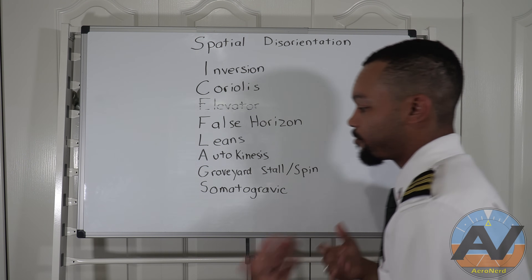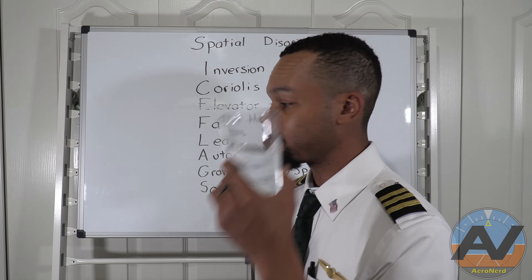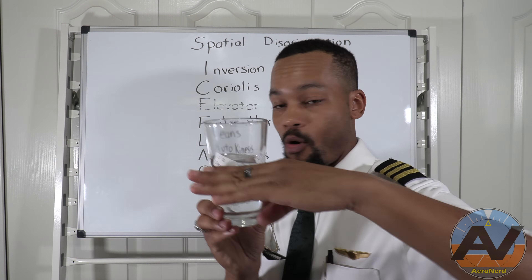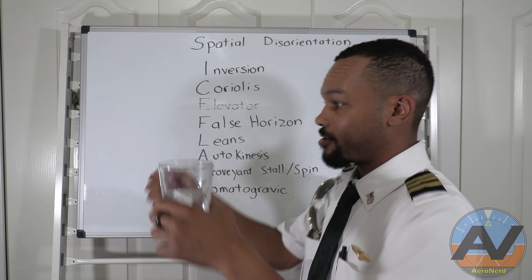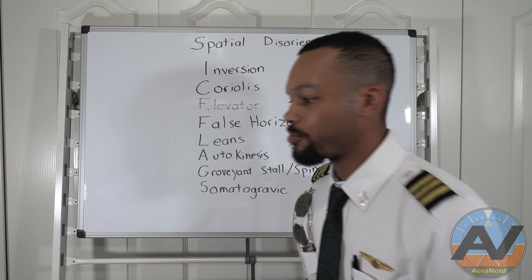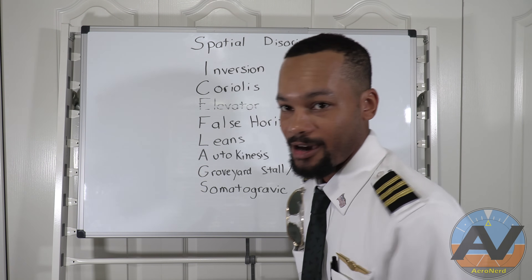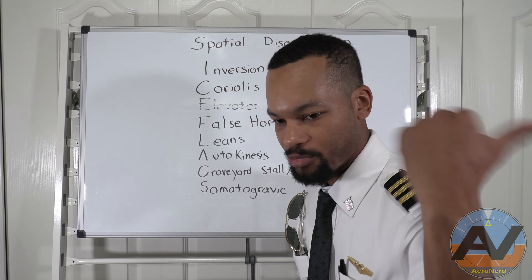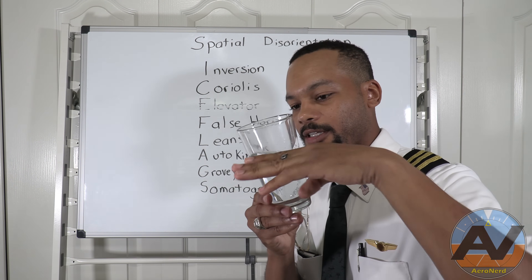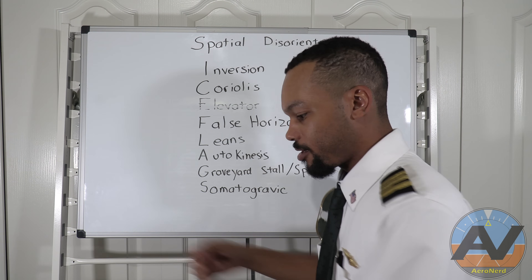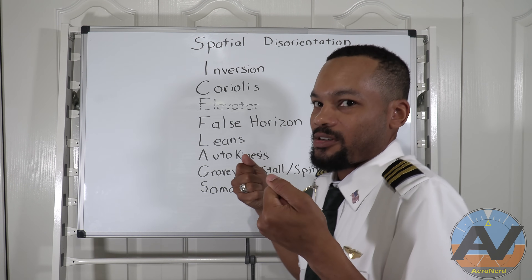Somatogravic illusion — this is what I was talking about before with acceleration. When you accelerate and can't see anything, the fluid goes backwards and you feel like you're tumbling backwards, so you push the yoke forward. But you don't want to do that when you're accelerating for takeoff — you want to pull back, not forward. The same thing happens in reverse when you're decelerating: put those speed brakes on, decelerate hard, and the sensory system shows you're in a descent. You naturally want to pull up, but if you're already going very slow and you pitch the nose up — well, you can imagine what happens.